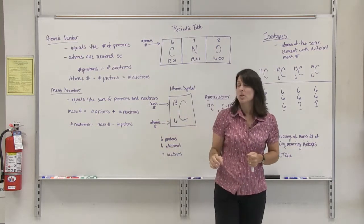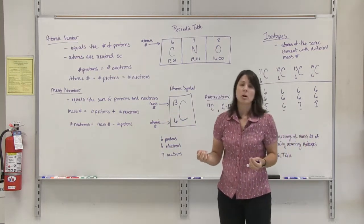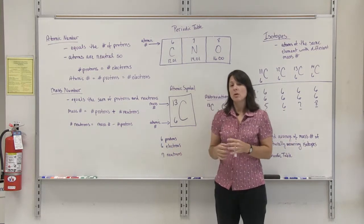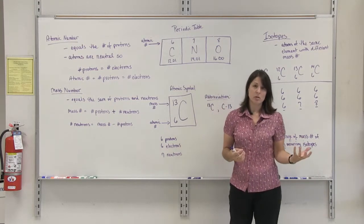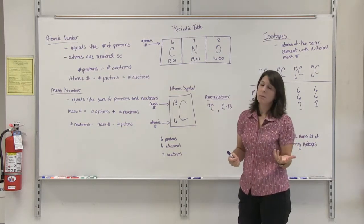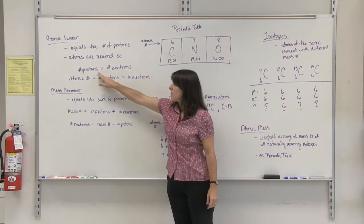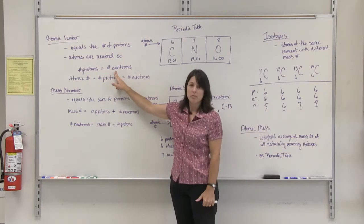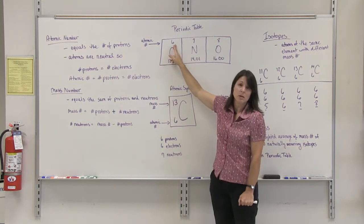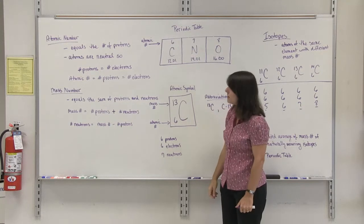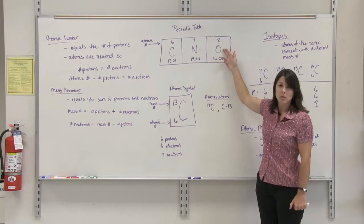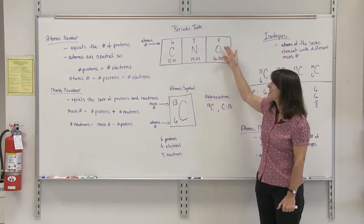Now the atoms are also neutral, so that means there is no charge. Protons, as you recall, are positively charged subatomic particles. So that means we have to have the same number of negatively charged particles to balance it out. Electrons are the negatively charged subatomic particles. So we're going to have the same number of protons and electrons in every neutral atom. Our atomic number not only tells us the number of protons, it also tells us the number of electrons. So carbon has 6 protons and 6 electrons, while oxygen has 8 protons and 8 electrons.